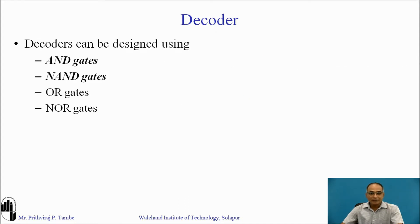Decoders can be designed using many ways. Some designs use AND gates, some designs use NAND gates, OR gates or NOR gates. In this particular session we are going to learn how to implement a combinational circuit with the help of a decoder designed using AND gates and NAND gates.